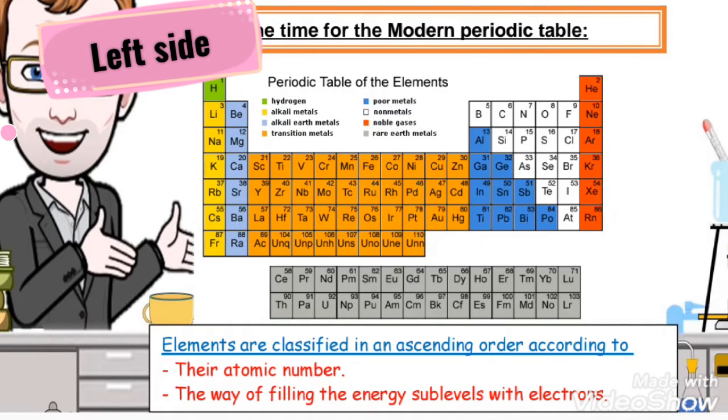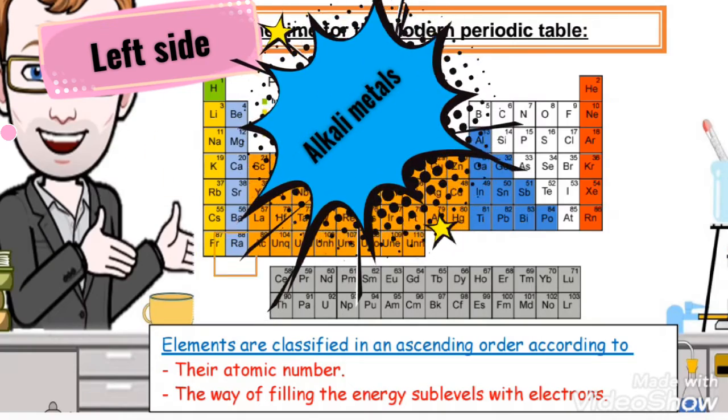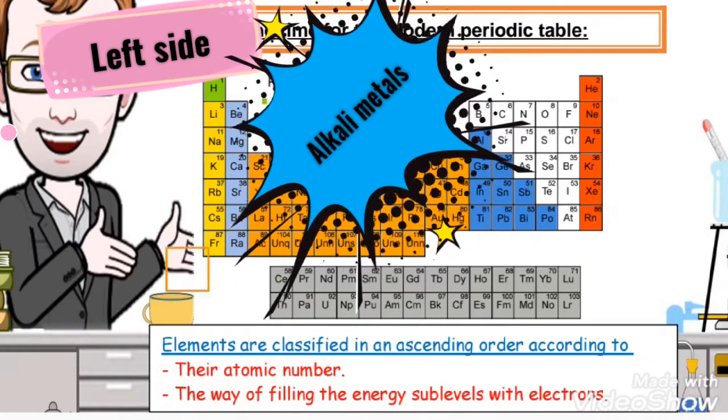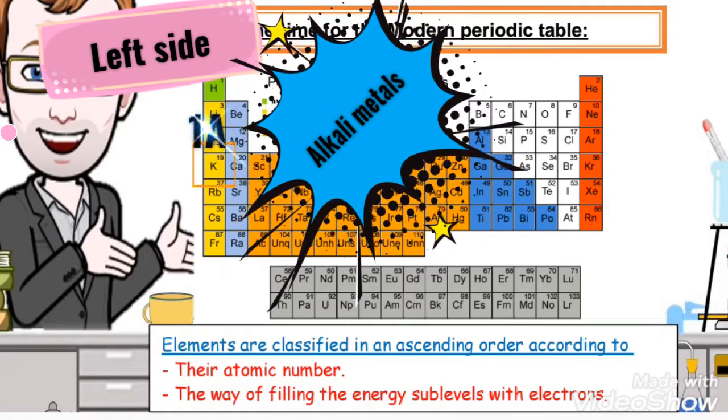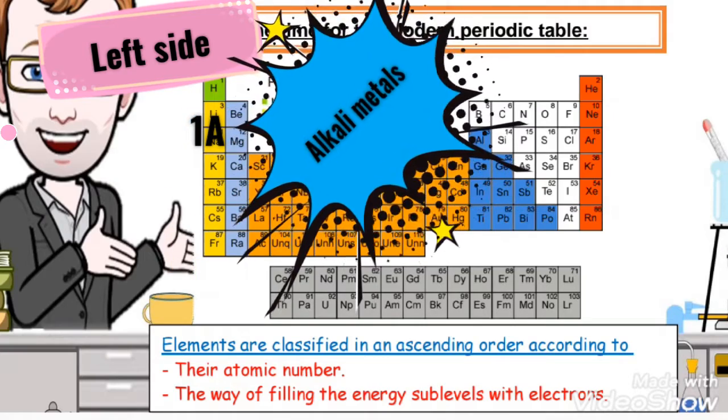The left side contains the alkali metals, which are placed in group 1A. When we choose 1A group, it's named alkali metal.